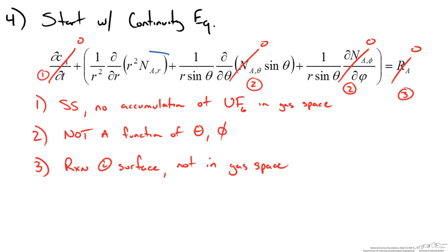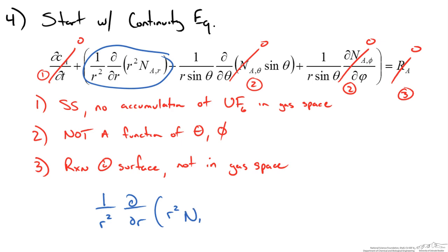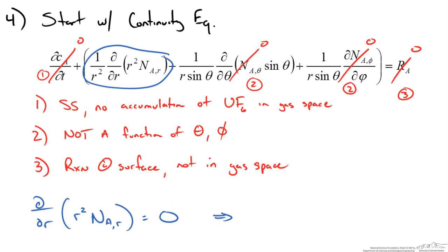What we are left with is the first term inside the parenthesis: (1/r²)(d/dr)(r² · N_Ar) = 0. This allows us to eliminate the r² factor, and what remains of the continuity equation tells us that r² times the flux in the radial direction equals a constant. We have now used and simplified the continuity equation.